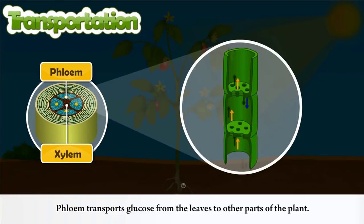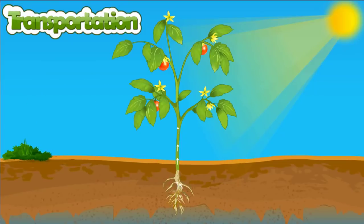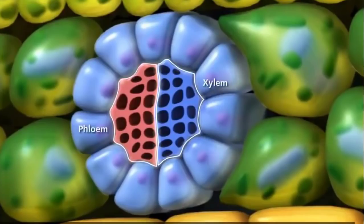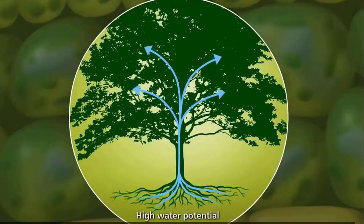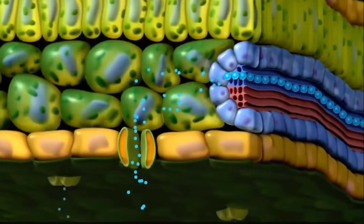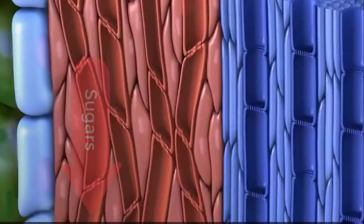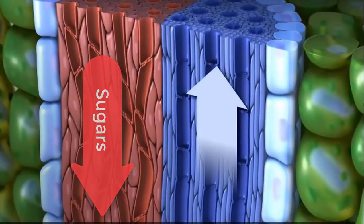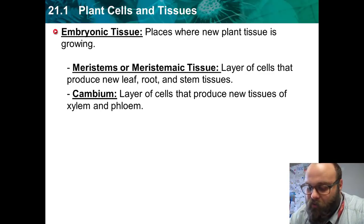Water travels up the plant and sugars and other photosynthetic products travel down the plant. A good way to remember xylem and phloem is: xylem goes high and phloem goes low — 'zi high, flow low.' Xylem transports water upwards from the ground towards the rest of the plant, and phloem takes sugars produced in the leaves and brings them down towards the rest of the plant.